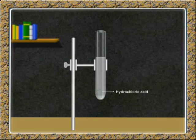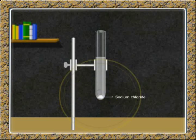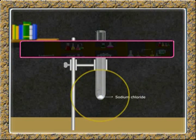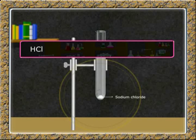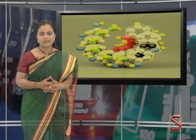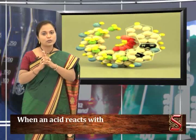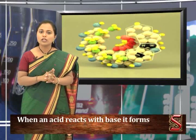Take hydrochloric acid in a test tube and add sodium hydroxide, which is a base, to it. A white precipitate — sodium chloride, which is a salt — and water are formed. The chemical equation is: HCl + NaOH → NaCl + H₂O. From this, we come to know that when an acid reacts with a base, it forms salt and water.